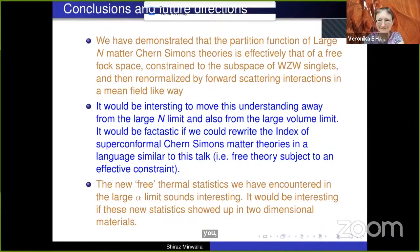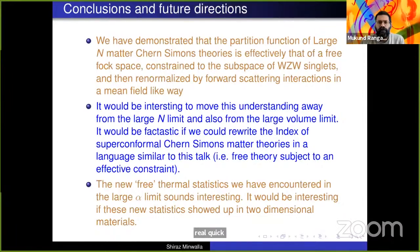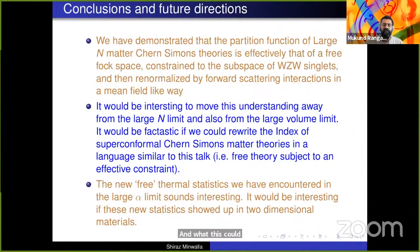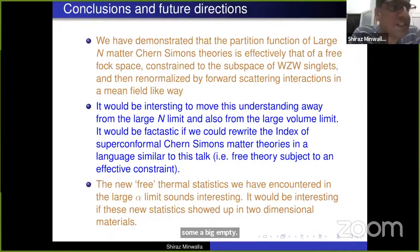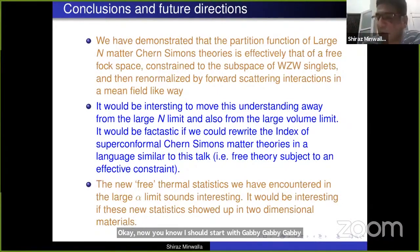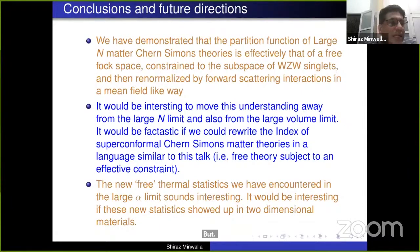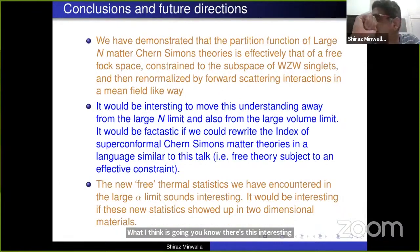Question from Mukund: Could you comment on the holographic side, especially with respect to these auxiliary parameters and what this Bose exclusion principle means if you're looking at, say, an ABJM-type theory?